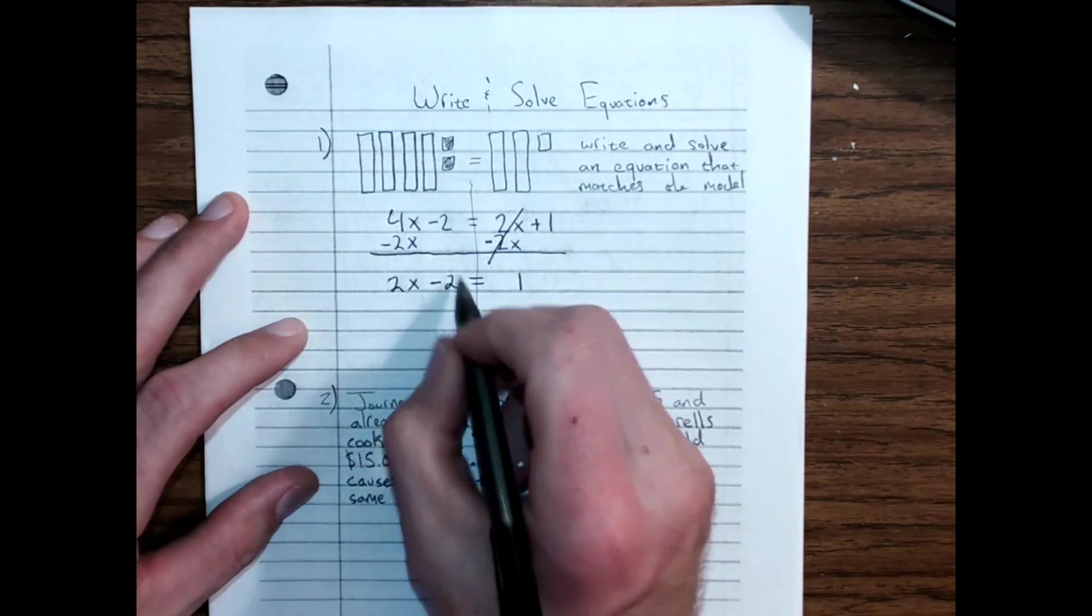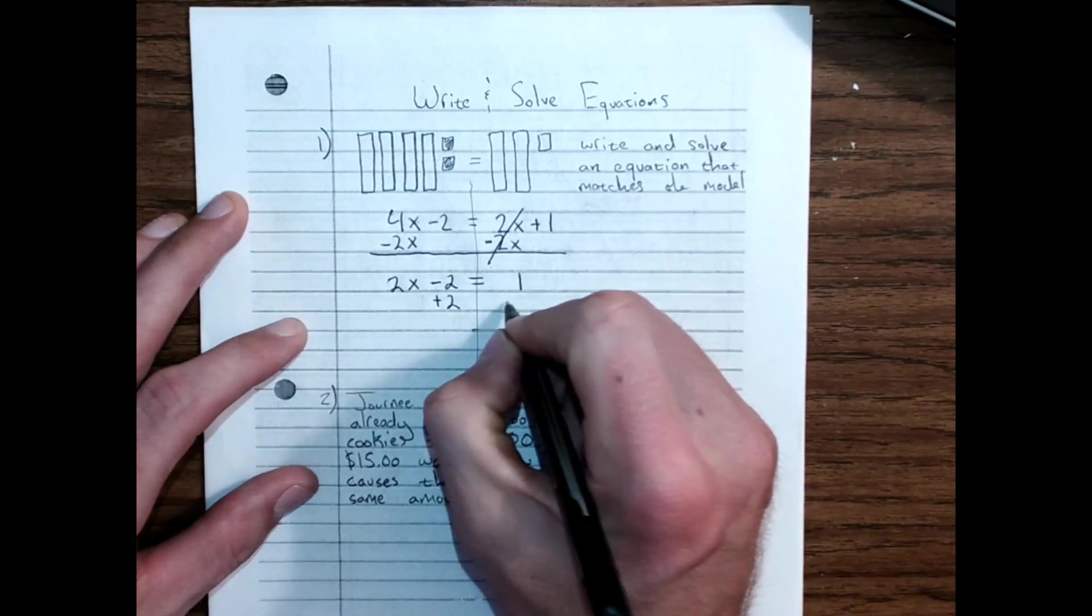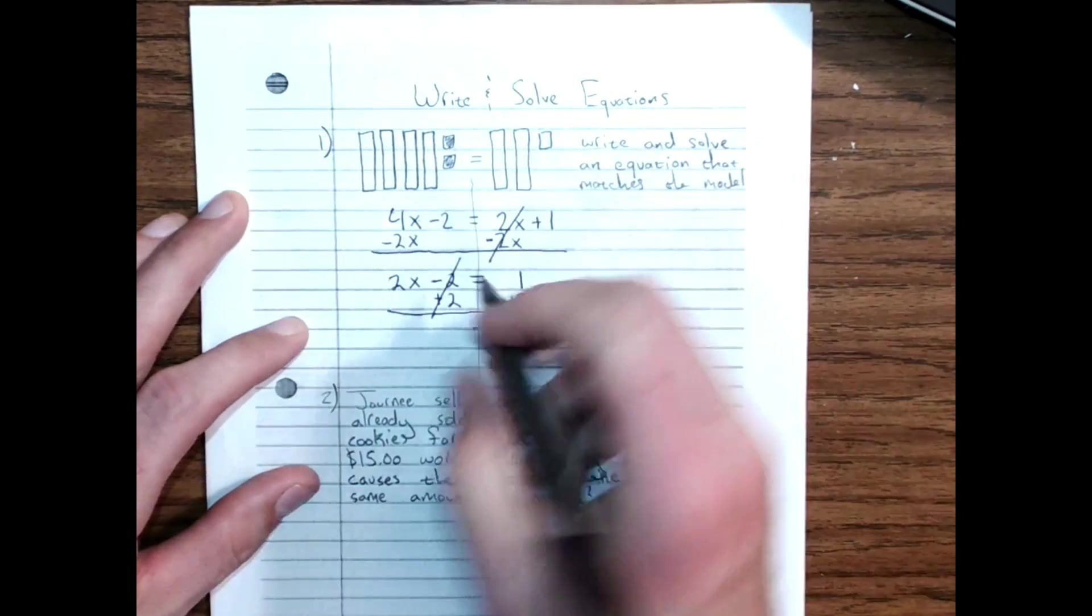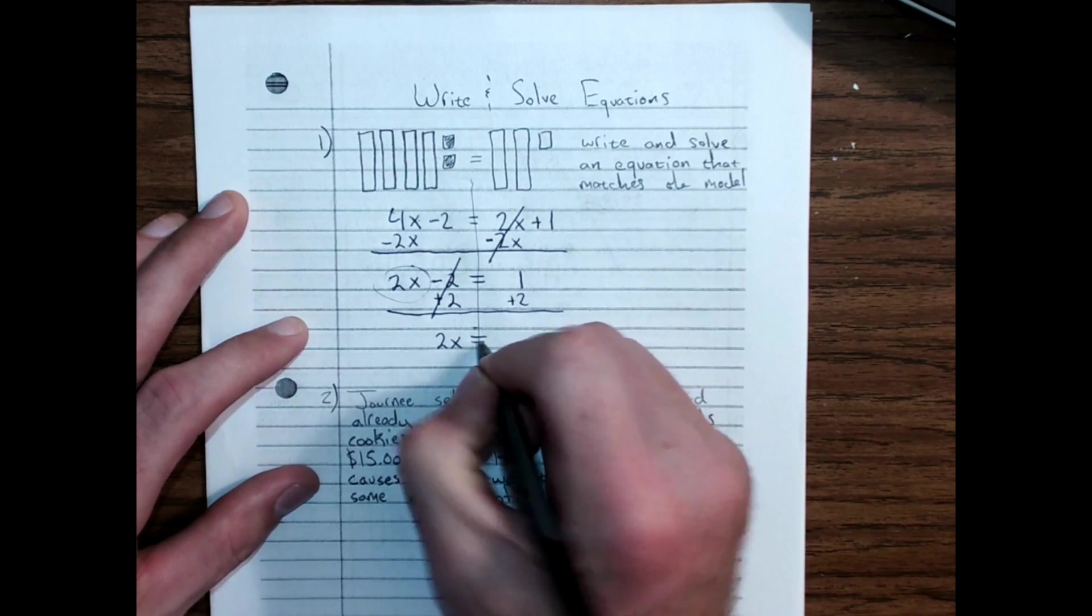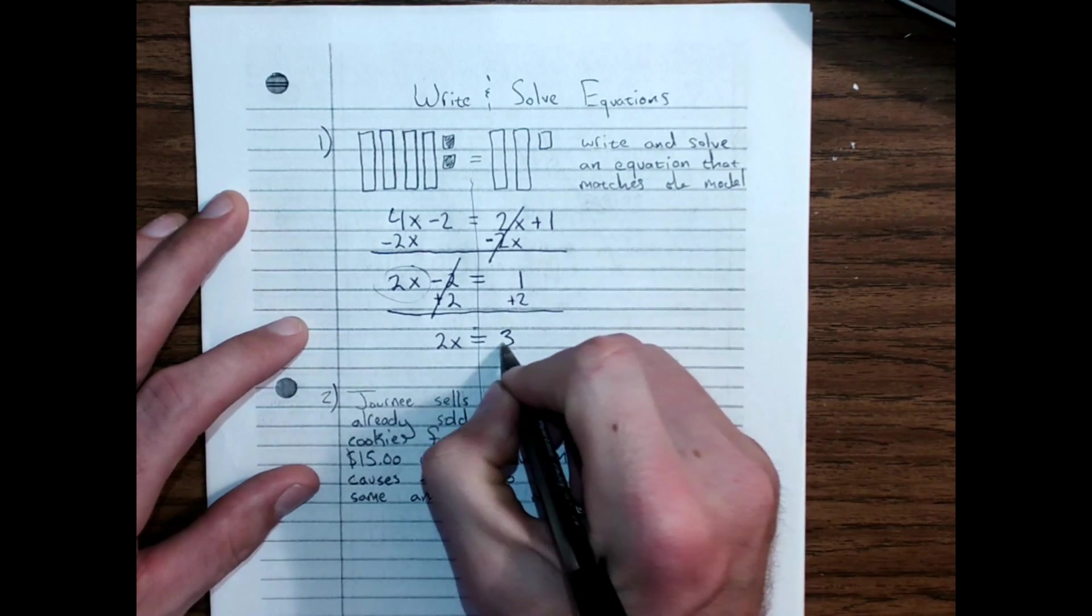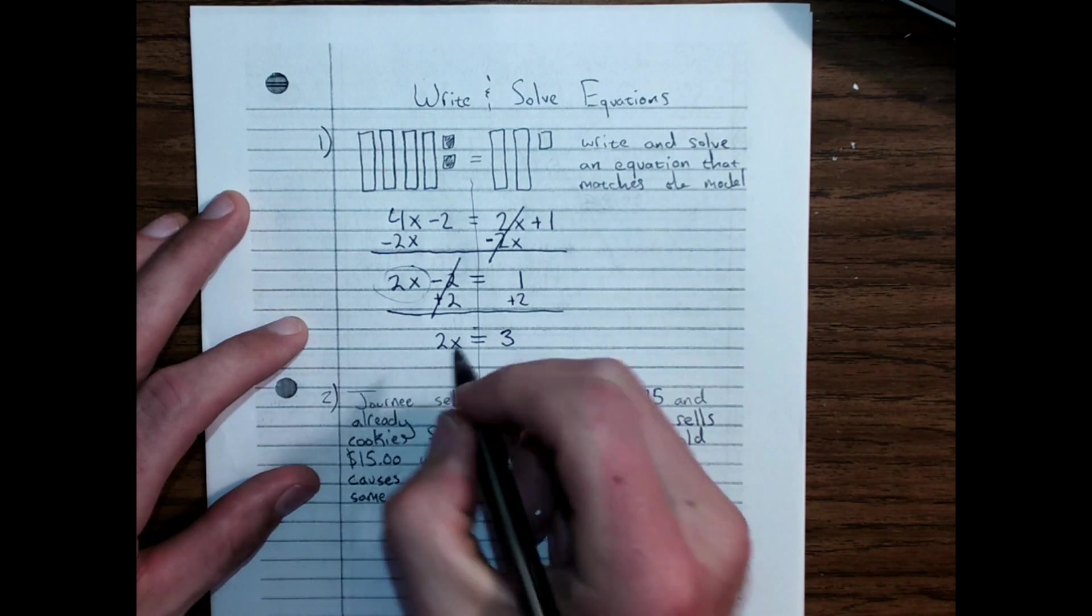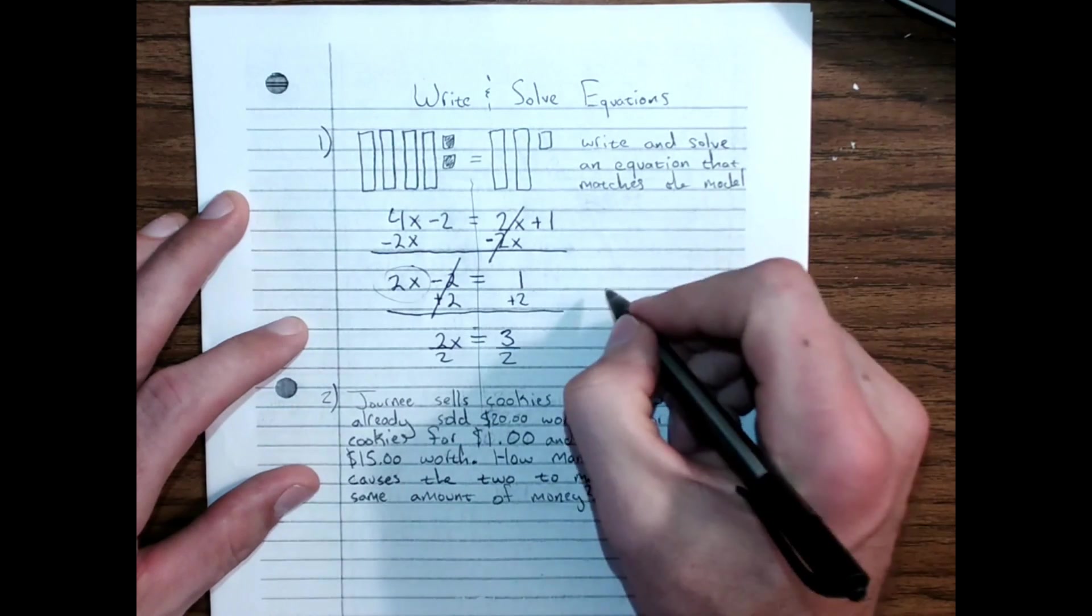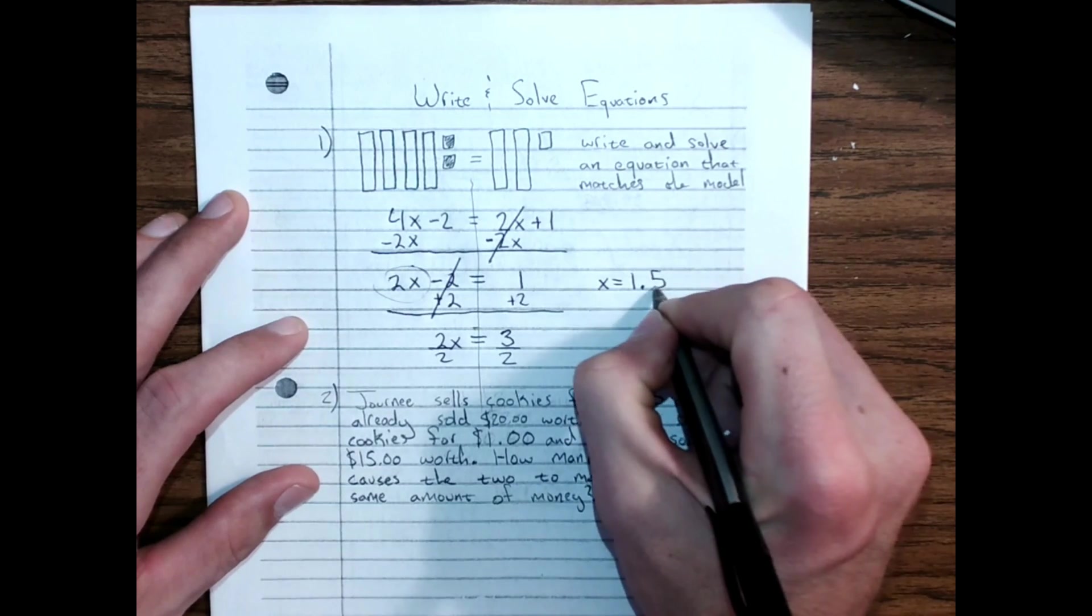And now I want to zero pair out the minus 2, by adding 2 to both sides. Zero pair, all that leaves is 2x, equals sign comes straight down, 1 plus 2 is 3. Divide both sides by 2.